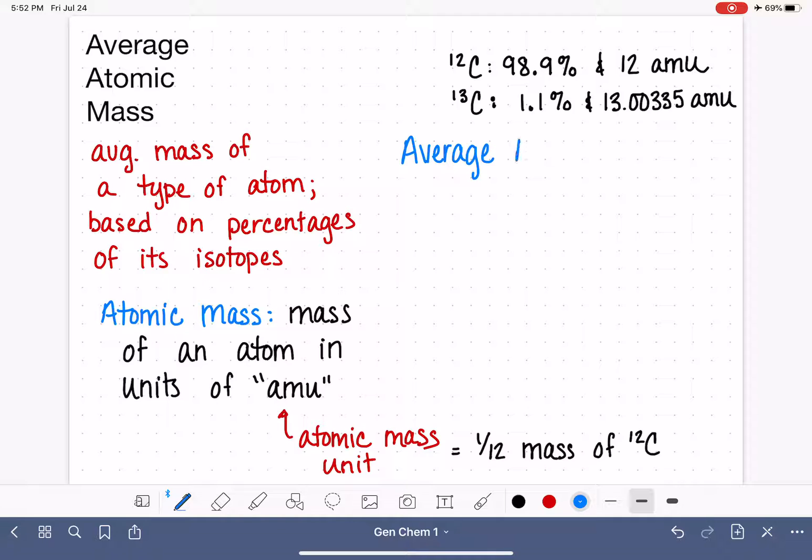The average atomic mass, to calculate this, we are going to multiply the percentage of each isotope in decimal form. So 98.9%, which is equivalent to 0.989. And then we're going to multiply that by the mass of that isotope in AMU. And we are going to add up this same calculation for all of our isotopes. So for carbon-13, our abundance is 1.1%, which is the same as 0.011. And we'll multiply it by its mass, which is 13.00335 AMU. And we're simply going to add these up together.